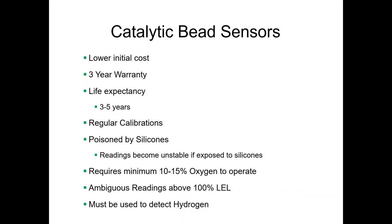The common features of a catalytic bead sensor: they have a lower initial cost than IR sensors because less is involved. They typically come with a 3-year warranty and a life expectancy of 3–5 years, though that expectancy depends heavily on environmental conditions and exposure levels. A sensor exposed to elevated LELs throughout its life will degrade faster than one that only occasionally sees elevated levels. Catalytic bead sensors require regular calibrations because they are a consumable-type sensor.